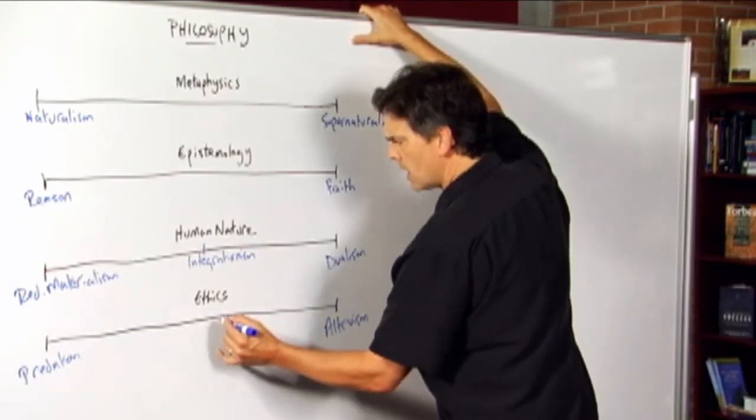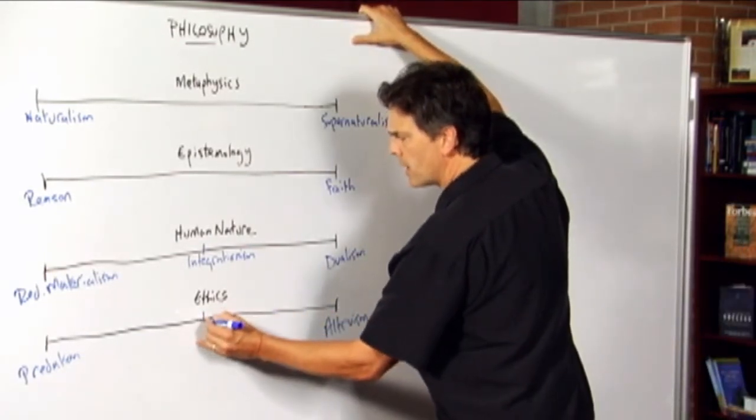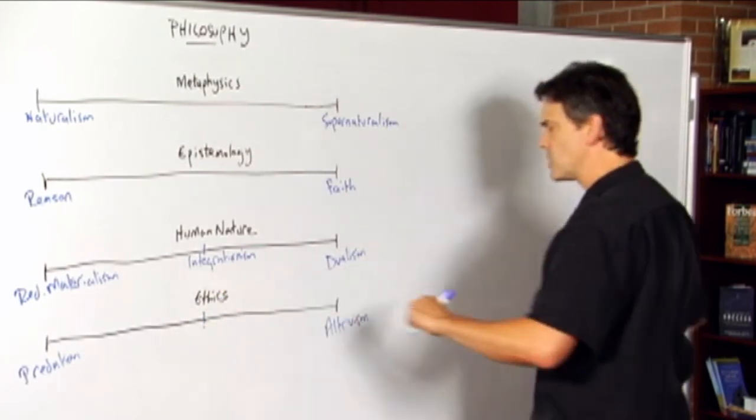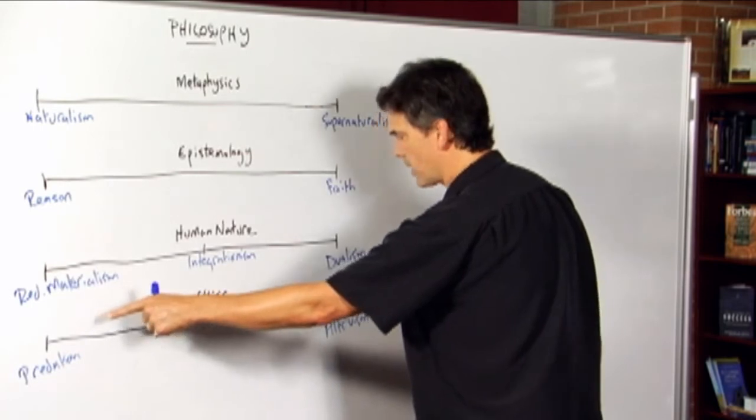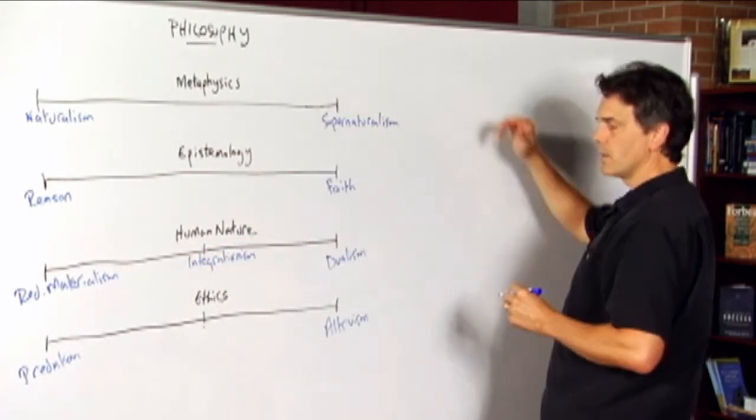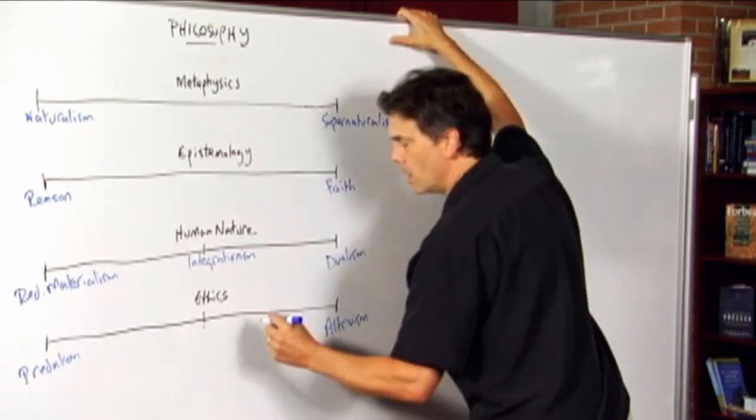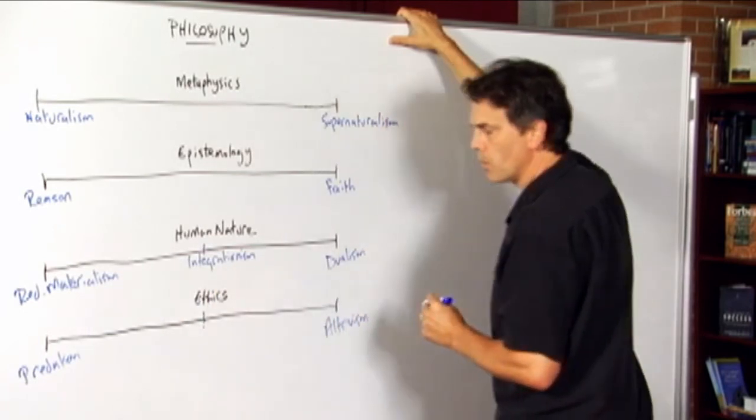And then a third position. I'm going to put a dotted line here because I don't really think it's a compromise between the two, but nonetheless it agrees with some things on the predation model and some things on the altruism model and disagrees also fundamentally with both of them.